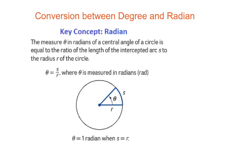Today's lesson is about conversion between degree and radian. First of all, what is radian? The measure theta in radians of a central angle of a circle is equal to the ratio of the length of the intercepted arc S to the radius R of the circle. In other words, we define theta in radian equals S over R.